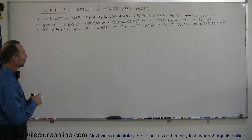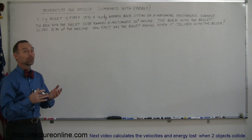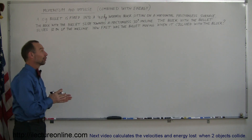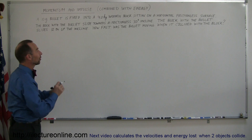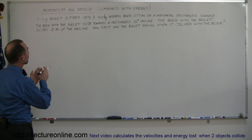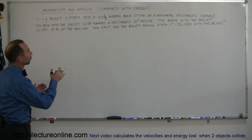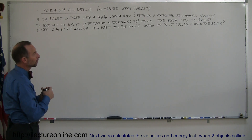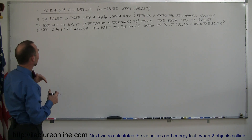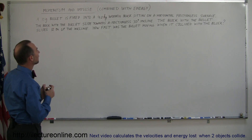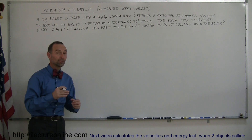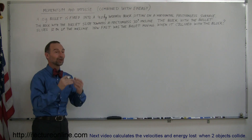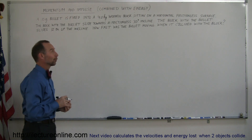The block with the bullet slide — after the collision, assuming that the bullet stays stuck in the block — toward a frictionless 30 degree incline. The block with the bullet slide 12 meters up the incline. The question is: how fast was the bullet moving before it collided with the block?